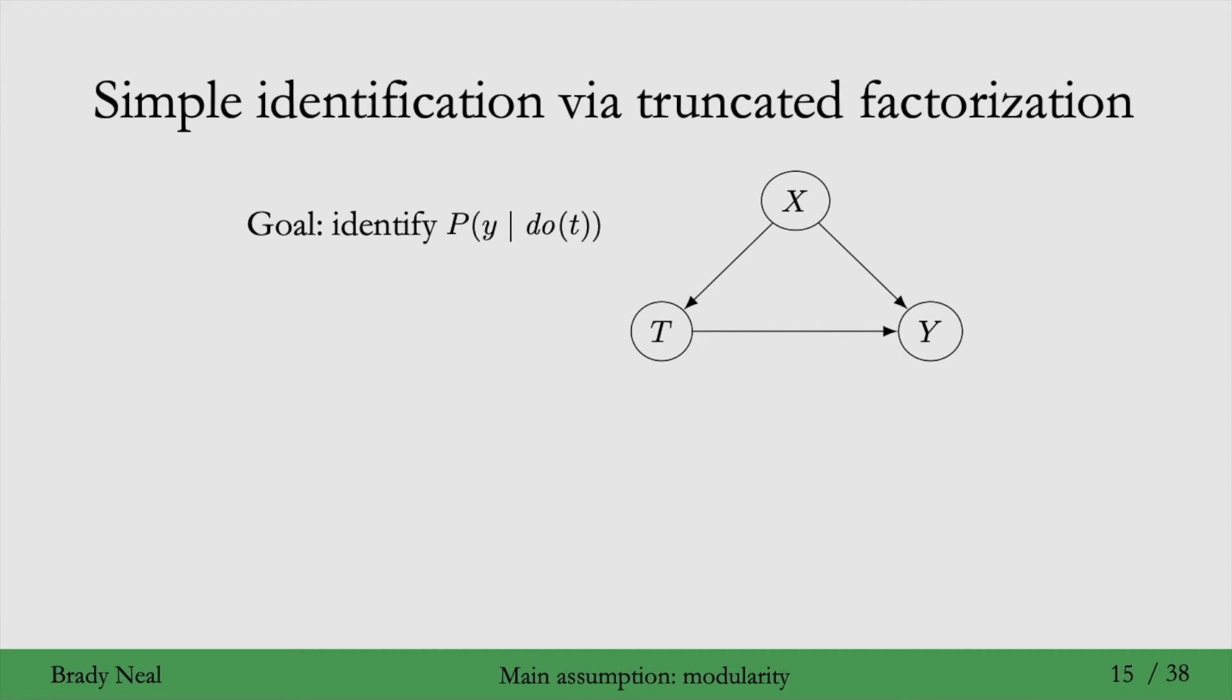So say we wanted to identify the causal estimate y given do t, given that this is the causal graph here, where x is a confounder of the effect of t on y. The first step is to use the Bayesian network factorization and just write down that factorization.